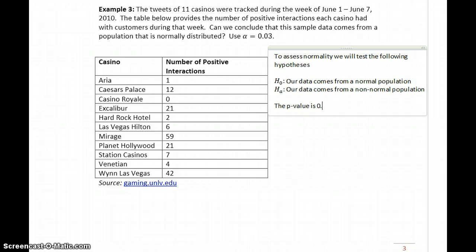The p-value is 0.011, which in this case is less than or equal to our value for alpha, which is 0.03. So we reject the null hypothesis. There is sufficient evidence to conclude that our data comes from a non-normally distributed population.